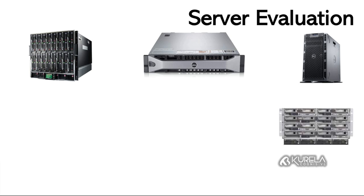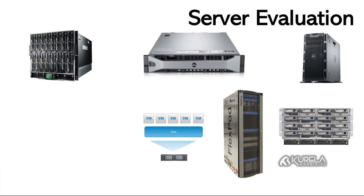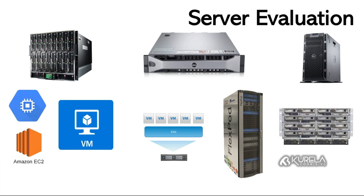We further moved to converged infrastructure (CI), where networking is consolidated — fiber channel, TCP/IP, and other traffic protocols converged into one single pipe. Then to hyper-converged infrastructure. Then to virtualization, where multiple virtual machines run on a single physical box. From a traditional data center model to the cloud model where virtual machines are delivered over the network. We further moved to Docker and containers, then to Kubernetes, and then to microservices — a complete server evolution.